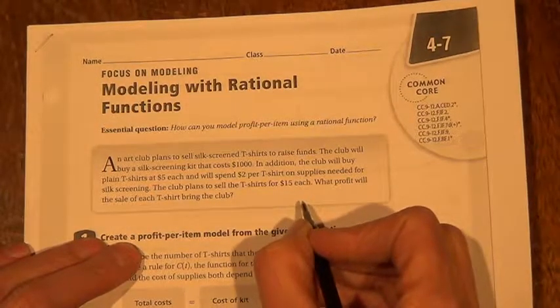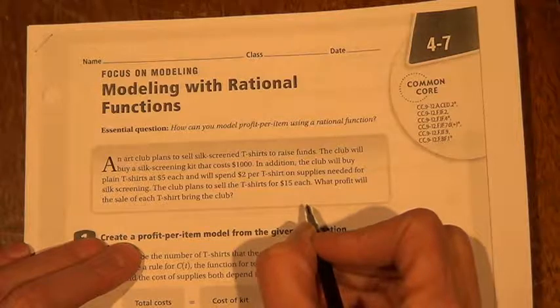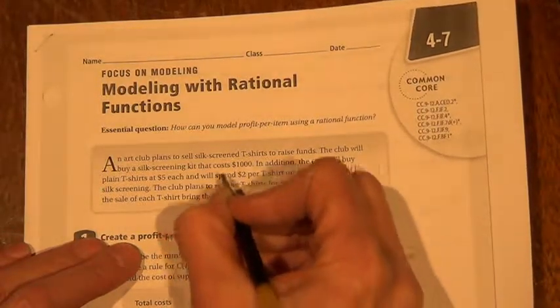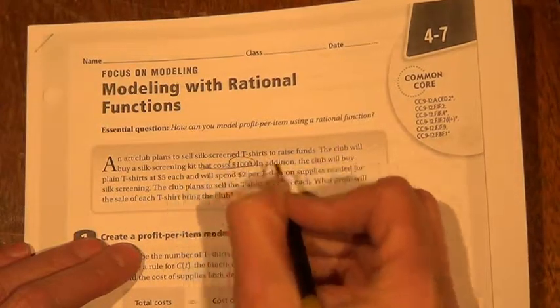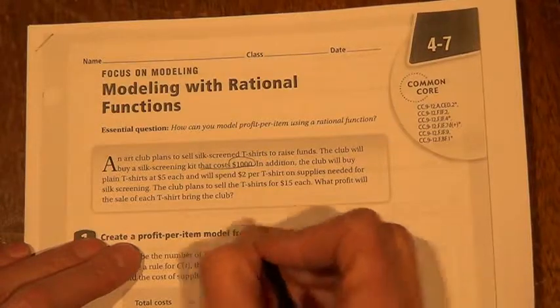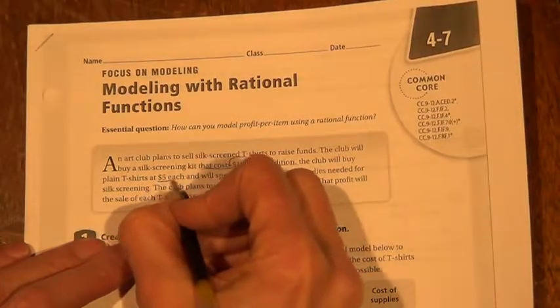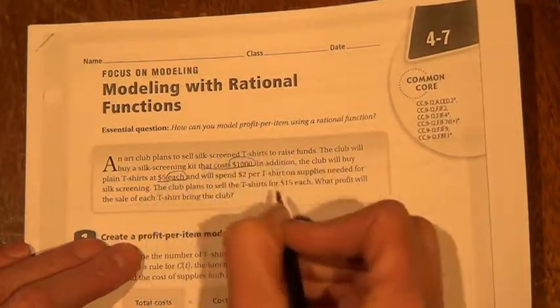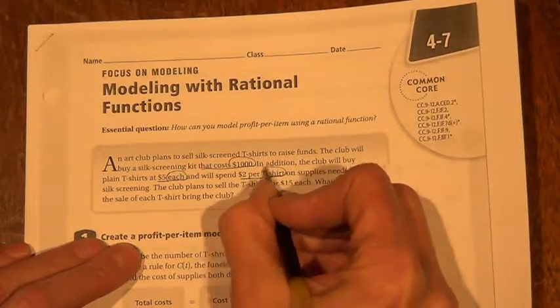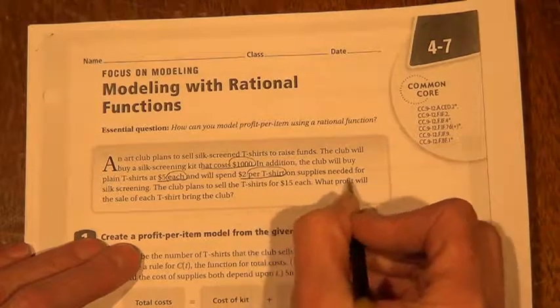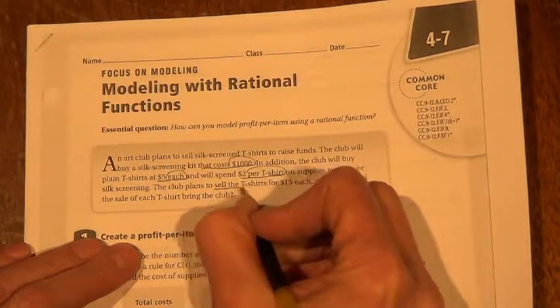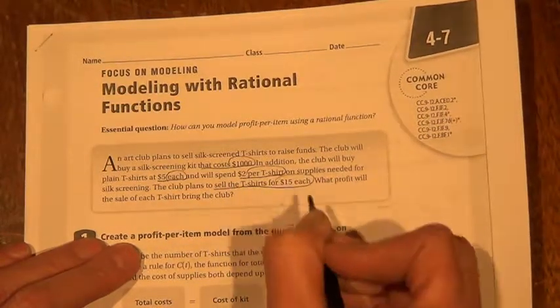It's talking about an art club that plans to sell silk screen t-shirts to raise funds. The club will buy a silk screening kit that costs a thousand dollars. In addition, the club will buy plain t-shirts, $5 each, and will spend $2 per t-shirt for supplies needed for silk screening. The club plans to sell the t-shirts for $15 each.